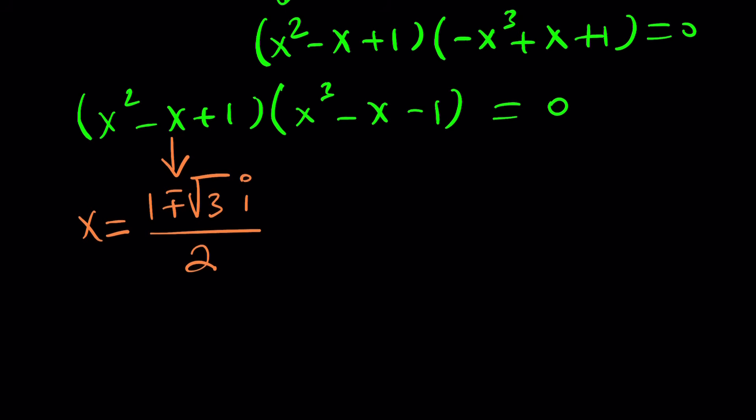There's no quintic formula, that's why we couldn't solve it that way. So we've got two complex non-real solutions from the quadratic factor. What about the cubic factor x cubed minus x minus one? We can actually deal with that one separately using the cubic formula. This problem is awesome because we're using a lot of algebra.